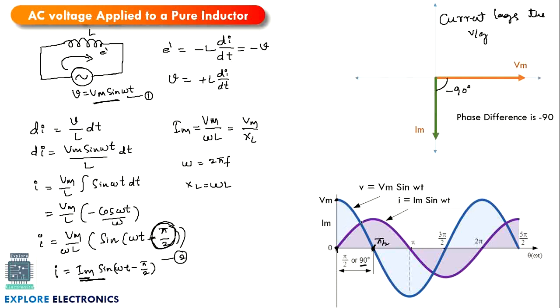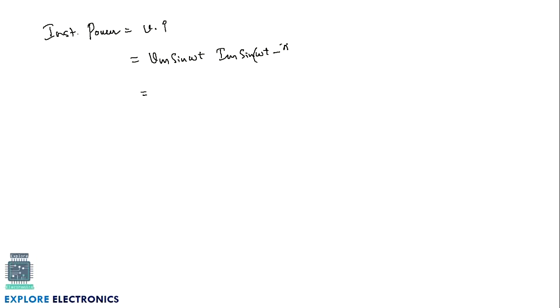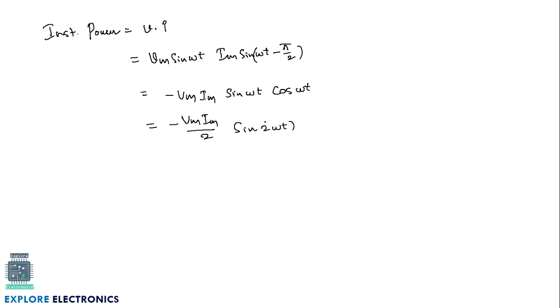Now let us calculate the instantaneous power. Instantaneous power P = V × I = Vm sin(ωt) × Im sin(ωt - π/2). This simplifies to -Vm Im sin(ωt) cos(ωt), which equals -(Vm Im / 2) sin(2ωt). In this expression, the power oscillates at twice the supply frequency.